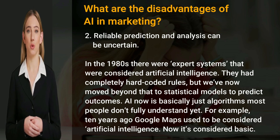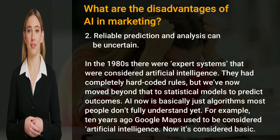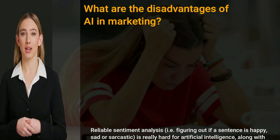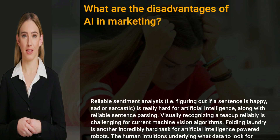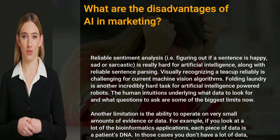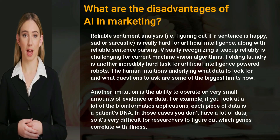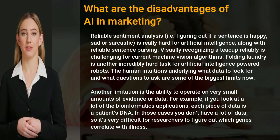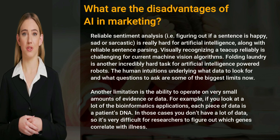For example, 10 years ago Google Maps used to be considered artificial intelligence. Now it's considered basic. Reliable sentiment analysis — figuring out if a sentence is happy, sad, or sarcastic — is really hard for artificial intelligence, along with reliable sentence parsing.